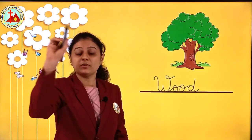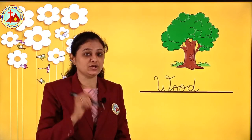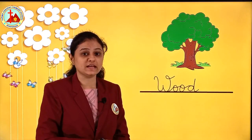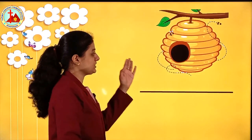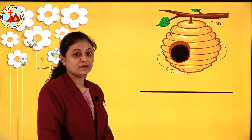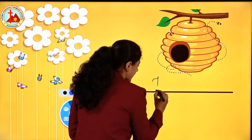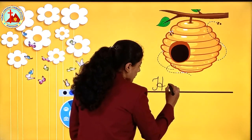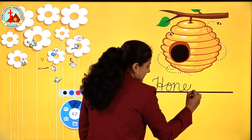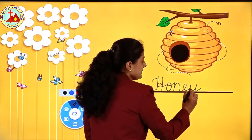Children, you see the above bracket? From that same bracket you are going to copy here down. Now the next picture is of a honeycomb. What do you get from honeycomb? Honey. H-O-N-E-Y, honey.